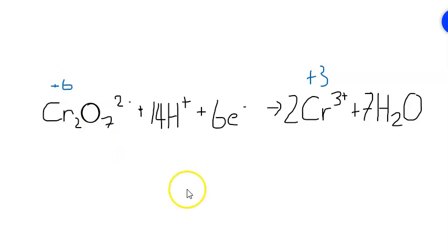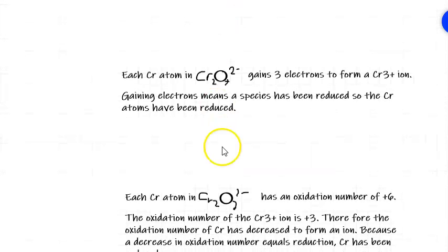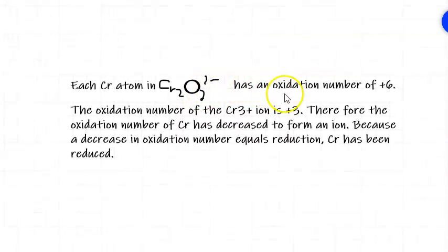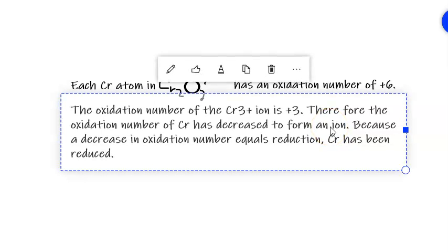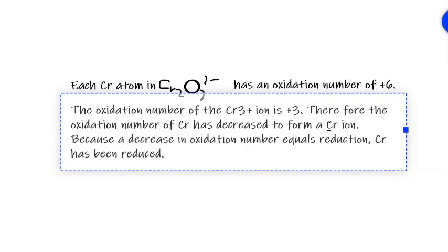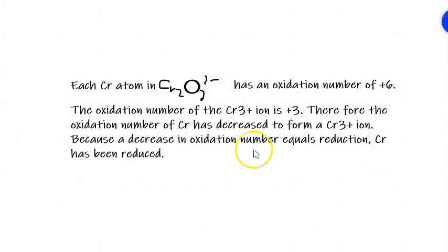So we would just write that, I'll give you a sample way of writing that down here. We would say that each chromium atom in the dichromate ion has an oxidation number of plus six. The oxidation number of the chromium three plus ion is plus three. Therefore the oxidation number of chromium has decreased to form a chromium ion, because it's actually gone from within an ion. Because the decrease in oxidation number equals reduction, chromium has been reduced, or you could say dichromate has been reduced.